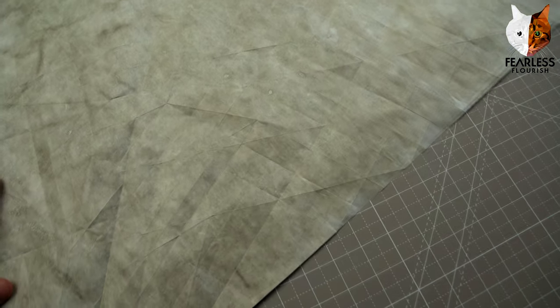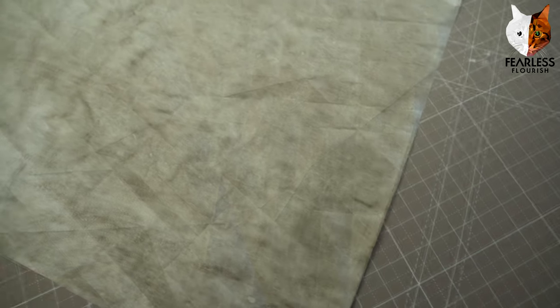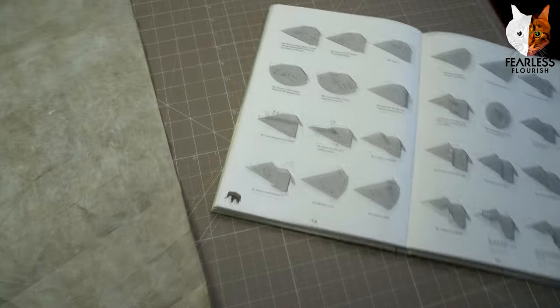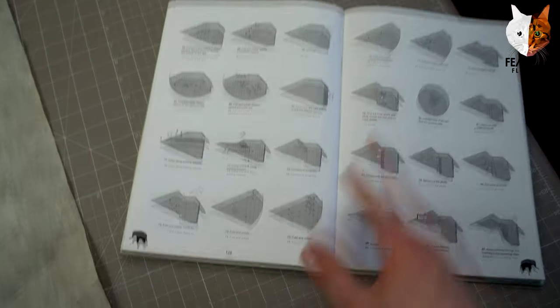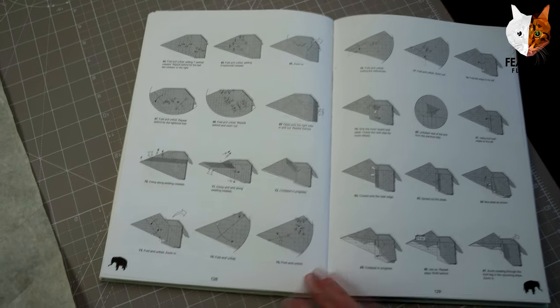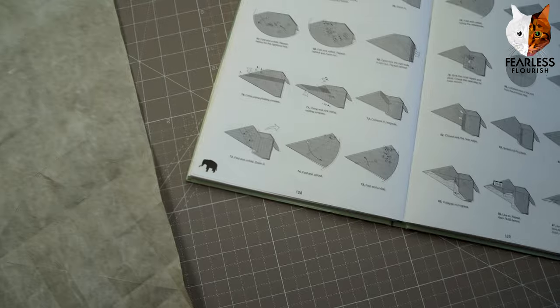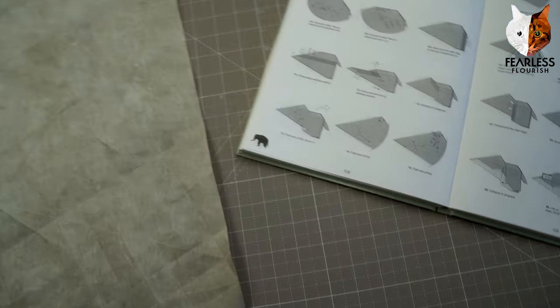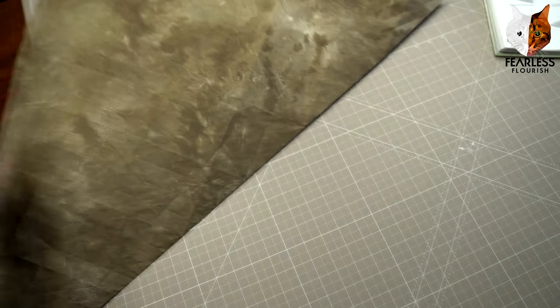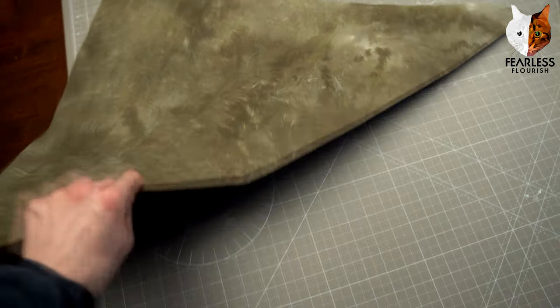It's really paid off and helped. It's such a good trick to do in every diagram as well. The look-ahead method: precrease what you're told to precrease and look ahead like the next 30 steps and see if there are anything else to precrease before you collapse. It's much easier to precrease when it's flat than when it's mid collapsed.